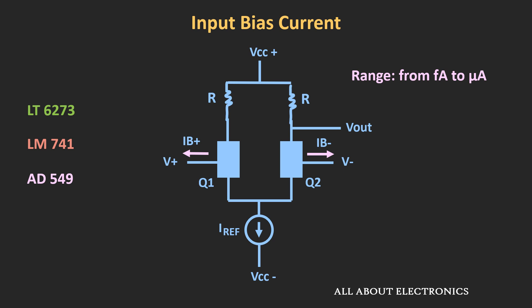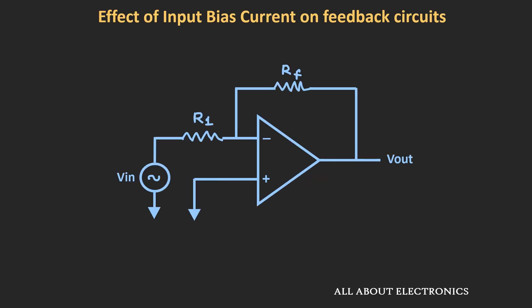For the general purpose op-amp LM741, the input bias current is in the range of nano amperes, while for high precision op-amps like the AD549, the input bias current is in the range of femto amperes. As you can see, the typical value of this input bias current is very small, and because of that, for most applications the effect of this input bias current will be negligible. But for applications where very precise output is required, this bias current becomes a critical parameter. So now let us see the effect of this input bias current on feedback circuits.